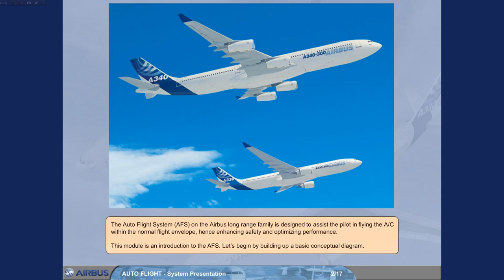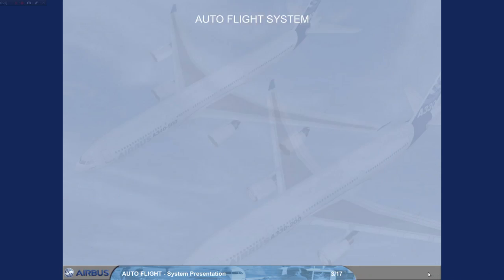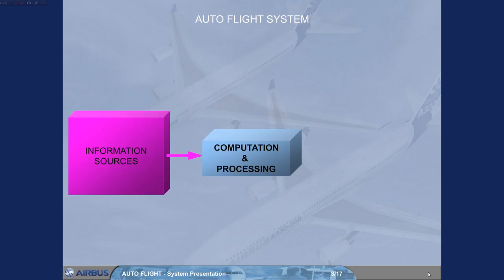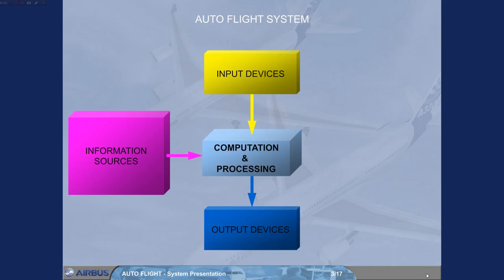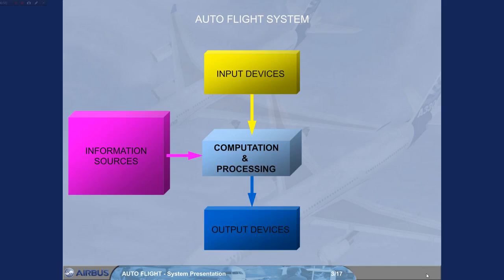Let's begin by building up a basic conceptual diagram. The Autoflight System can be thought of as consisting of four main sections. At the heart of the system is a computation and processing section — the brain. The central processing section has access to several information sources. The pilots have access to the central processing section via input devices. After computation and processing, commands are provided to output devices.